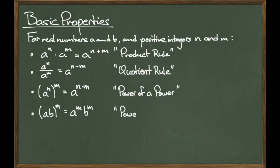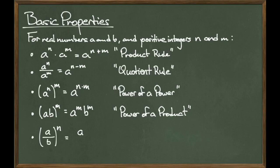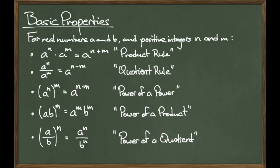Next, consider the case where I have a product raised to a power. Then a times b to the m is equal to a to the m times b to the m. This is called the power of a product rule. Our last rule tells us what to do if we have a fraction raised to a power. So a over b to the n is actually equal to a to the n over b to the n. This is called the power of a quotient rule.